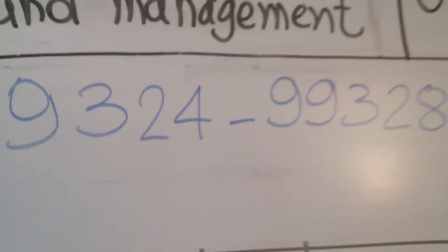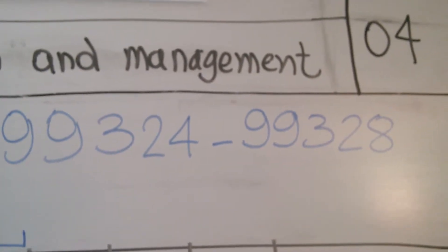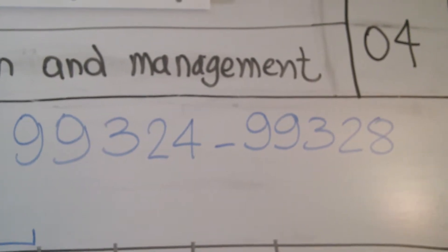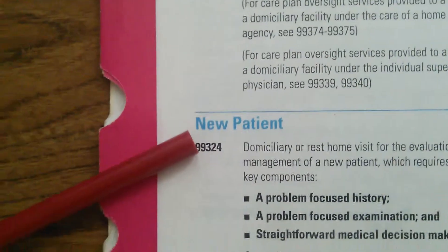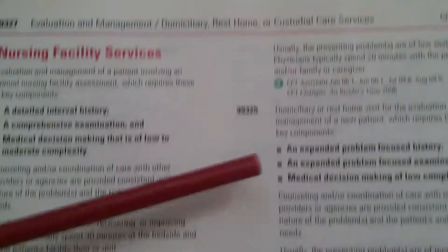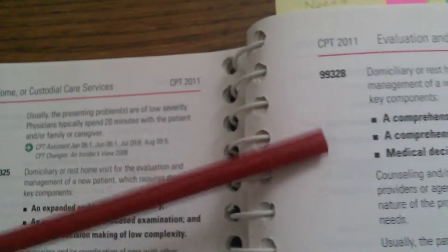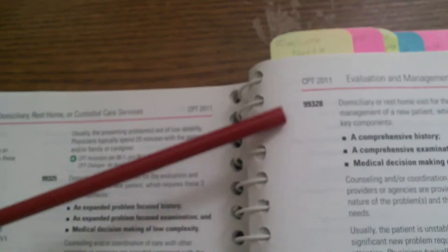We're going to write down the first step of our path — this is our range of codes. Now we need to find out which one is the right code, so we go to the tabular for those numbers. It starts at 99324 and goes all the way down through the next column — there are five codes total.